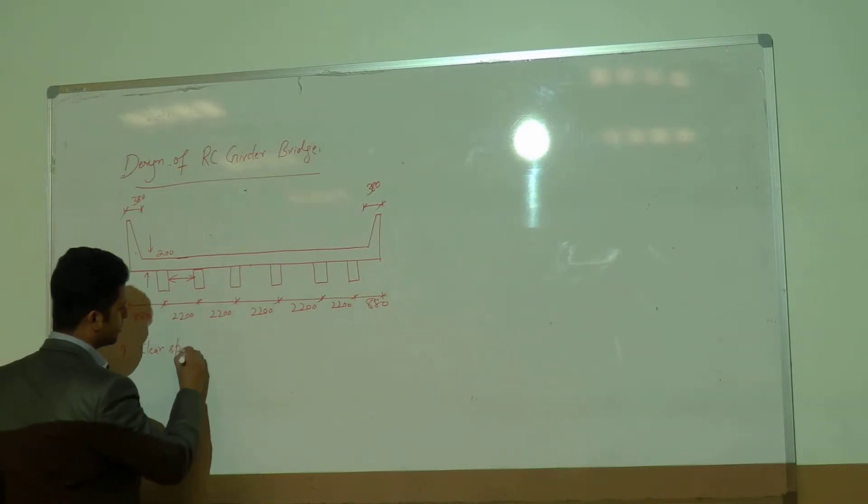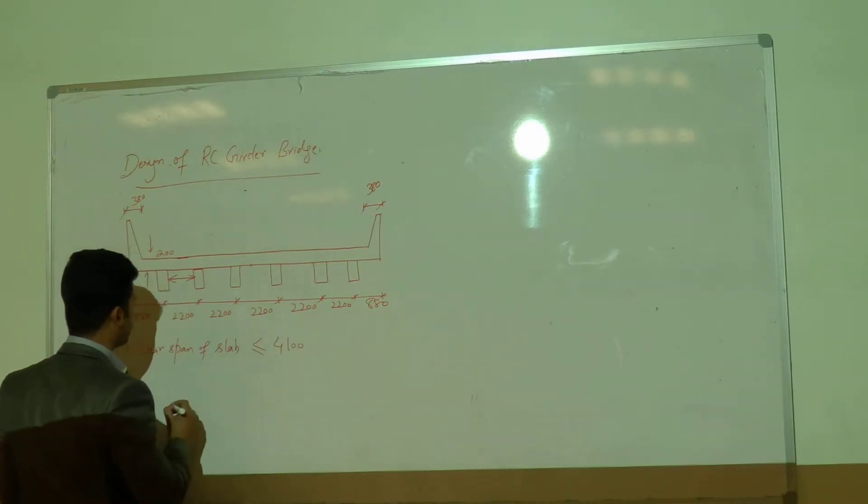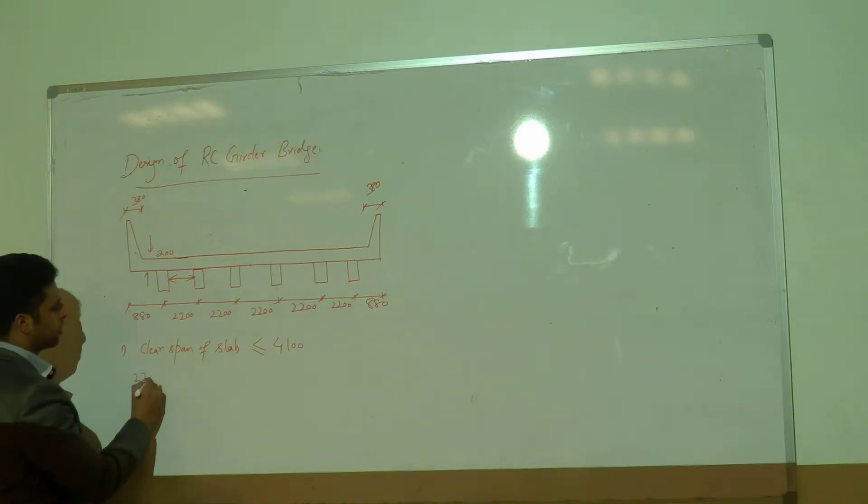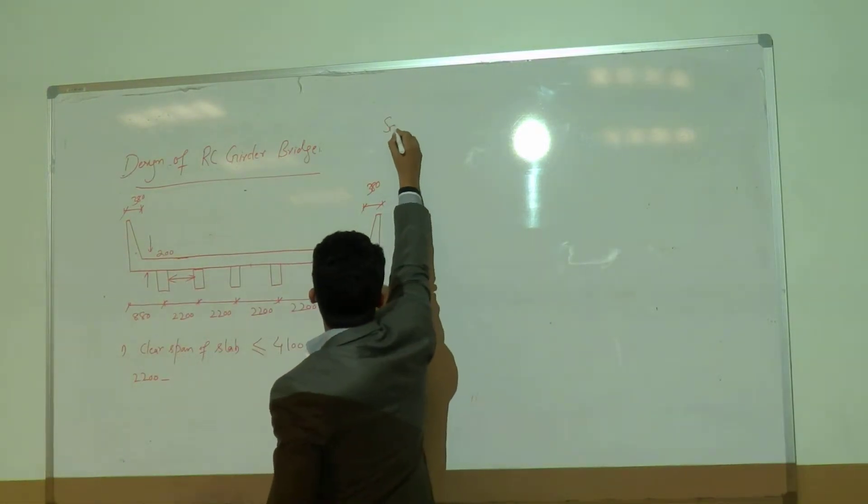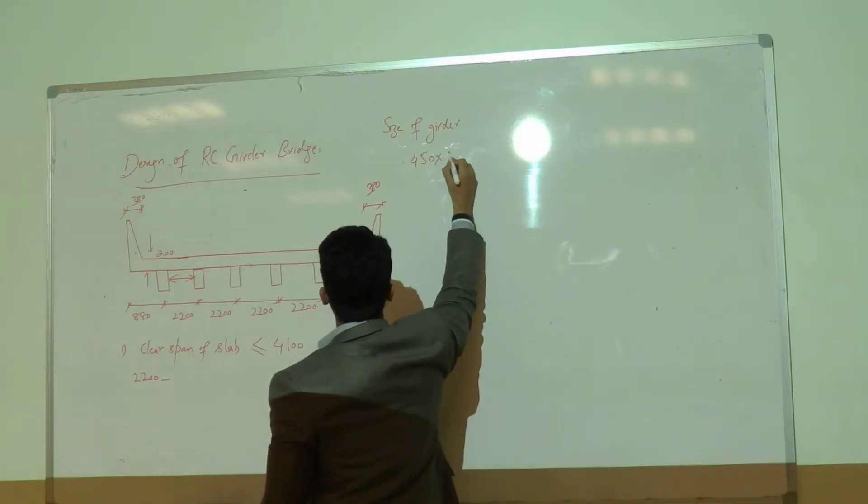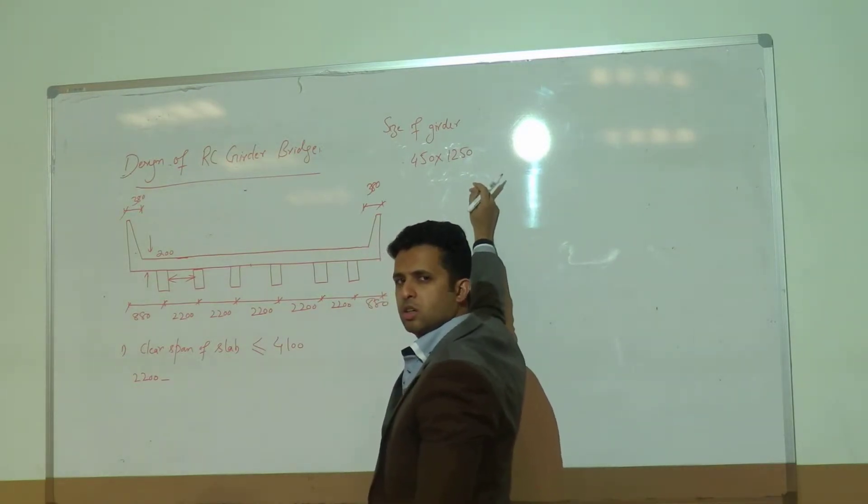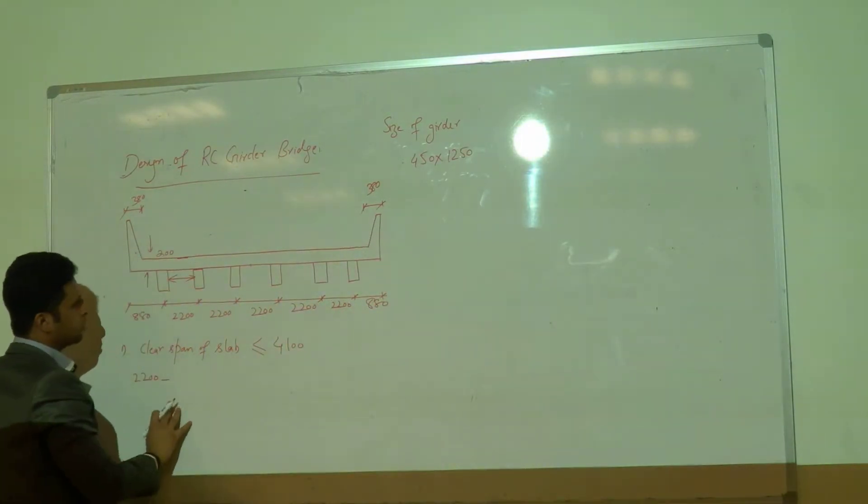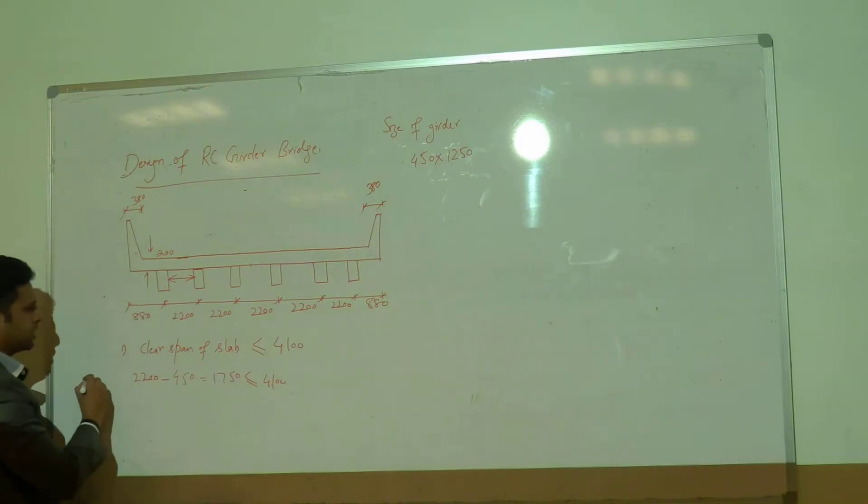How much is the clear spacing between the girders? 2200 minus the size of the girder which was 450. We got 1750, which is far less than 4100. So the condition number one is satisfied.